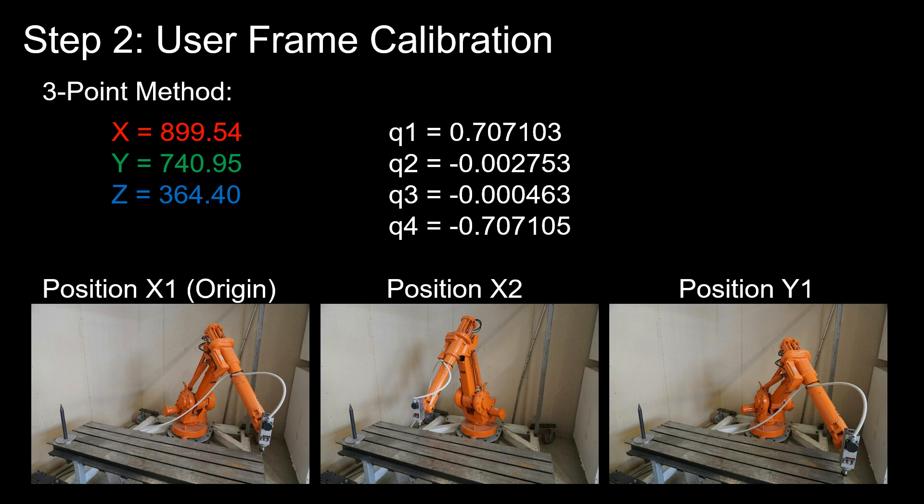The picture in the middle, position X2, is along the X-axis. And here it's important to move the robot a long distance to get a good accuracy result. If you just make a short move between X1 and X2, then a small error in the Y direction will influence your X-axis vector much more than if you have a long move.